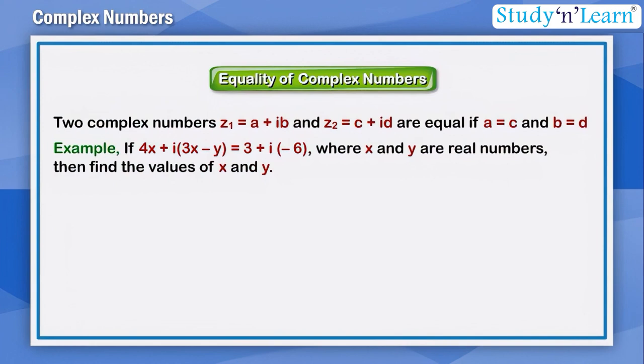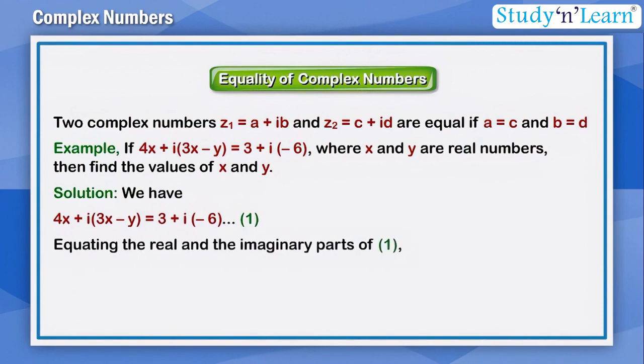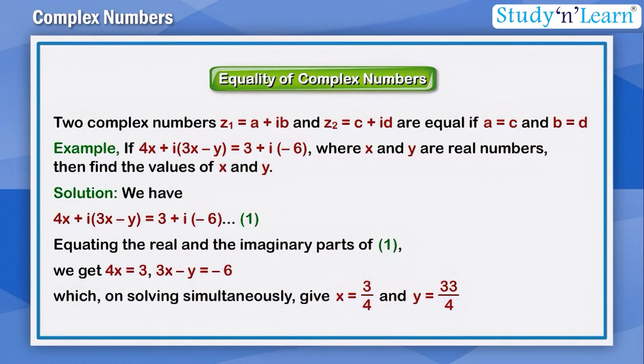Let us do an example. If 4x + i(3x - y) = 3 + i(-6), where x and y are real numbers, then find the values of x and y. Solution: We have 4x + i(3x - y) = 3 + i(-6). Equating the real and imaginary parts, we get 4x = 3, 3x - y = -6, which on solving simultaneously, give x = 3/4 and y = 33/4.